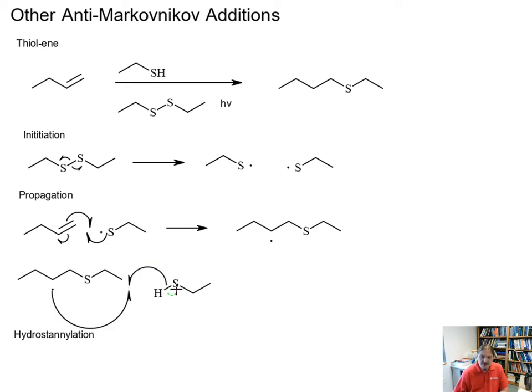Like other radical addition reactions, the second propagation step is a hydrogen abstraction. That serves to regenerate the ethyl thio radical, which can go back into the first step of the propagation.